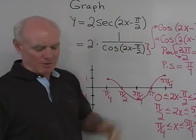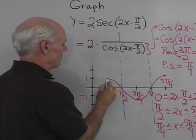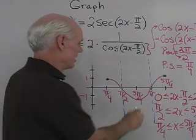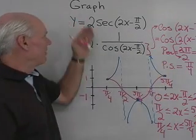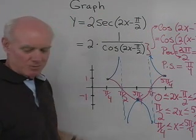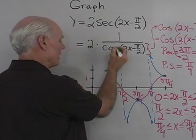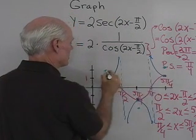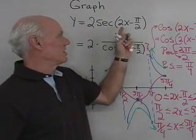Now I want the secant graph. Everywhere my cosine is 0 I draw an asymptote, since the reciprocal of 0 is undefined. Where the cosine is 1, the secant is 1, and where it's negative 1, the secant is negative 1. That gives me the graph of sec(2x − π/2). The last step is multiplying by 2: where y was 1 it becomes 2, and where it was negative 1 it becomes negative 2, giving the final graph of y = 2 sec(2x − π/2).